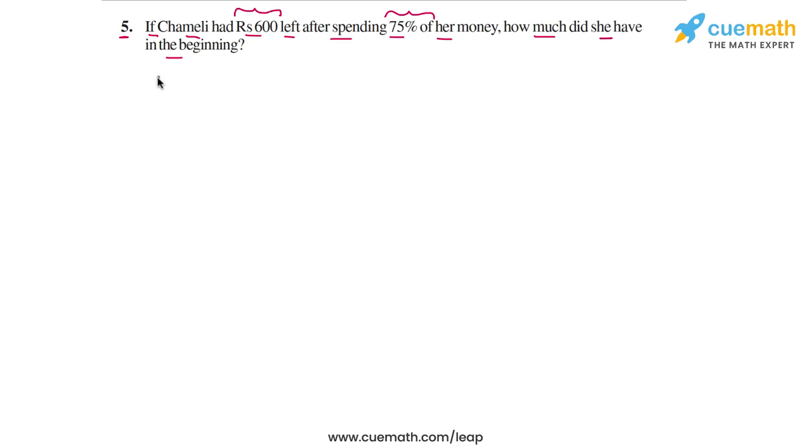The observation we make to solve this problem is that the money spent by Chamelee as a percentage is 75%. 75% of whatever money she had in the beginning, which means that the money left, money she has left as a percentage of the original money will be 100 minus 75, this much percentage or 25%.